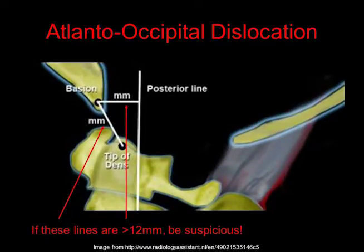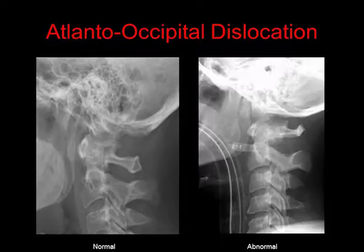If the posterior axial line and the basion-dental interval are greater than 12 mm, be suspicious. Here's an example of a patient with atlanto-occipital dissociation. On the left, the C1-C2 relationship is normal. On the right, we can see that the entire head is dislocated anteriorly in relation to the C1-C2 vertebral bodies. The posterior axial line and basion-axial intervals are increased in this case.